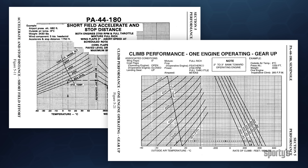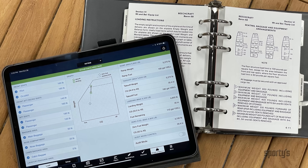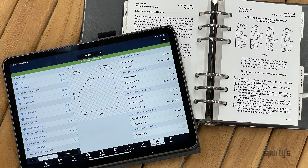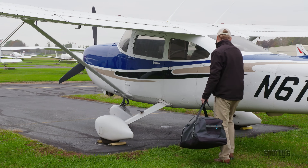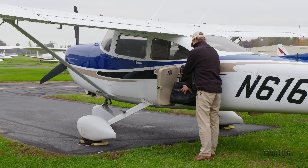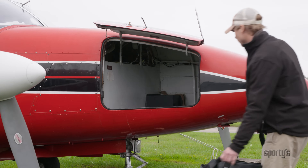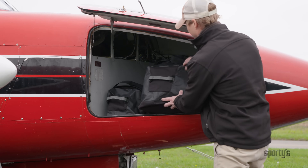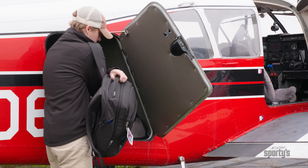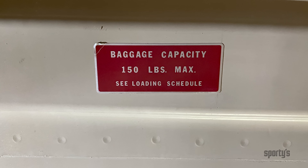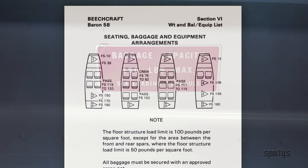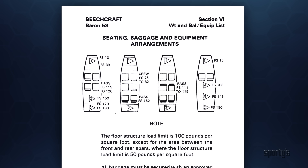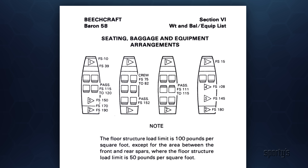The principles behind weight and balance calculations do not change with a multi-engine airplane. What does change is the number of variables. In your four-seat single-engine trainer, your options for the carriage and placement of baggage were limited. In a typical twin, you will find more seats and more baggage compartments. You may have the choice of loading baggage into a nose compartment, a rear compartment, or even into a wing locker. Each compartment will have its own limitations and affect the CG differently. The manual for your airplane will provide you with the information you need to make appropriate loading decisions. Some manufacturers even include suggested loading for common scenarios.